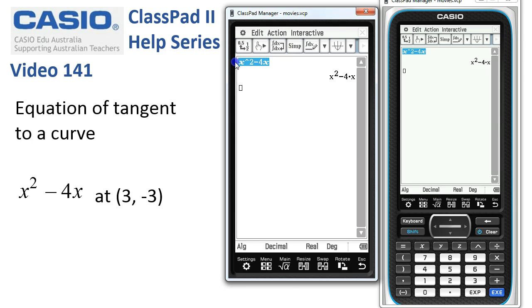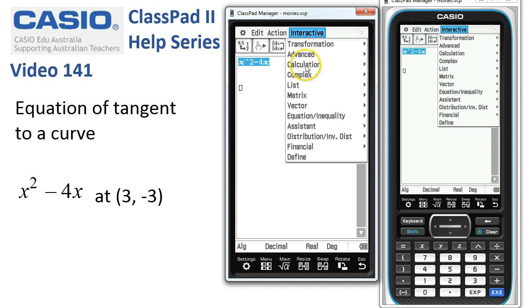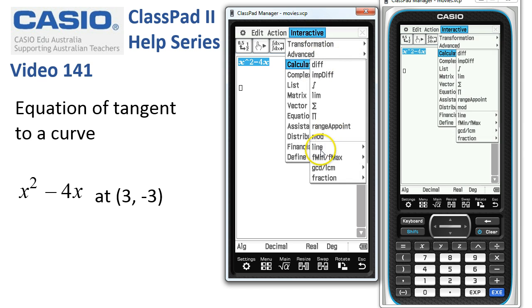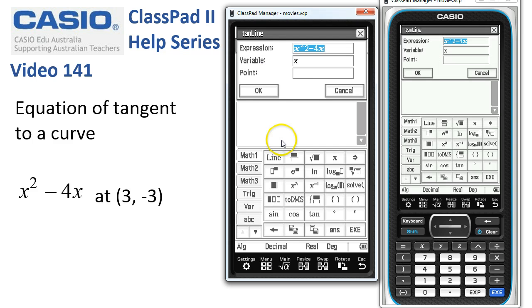I'll select the function and tap onto interactive calculation, head down to the line submenu, and we can either calculate the normal or the tangent. Let's choose the tan line function, and basically everything's pretty much ready to go.